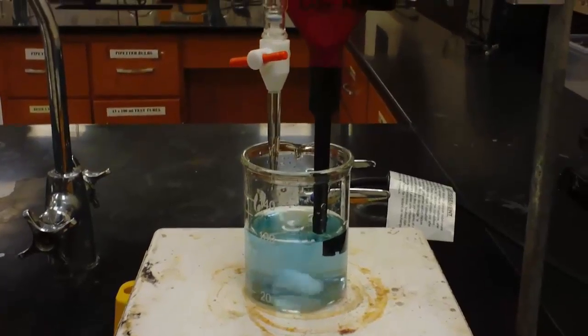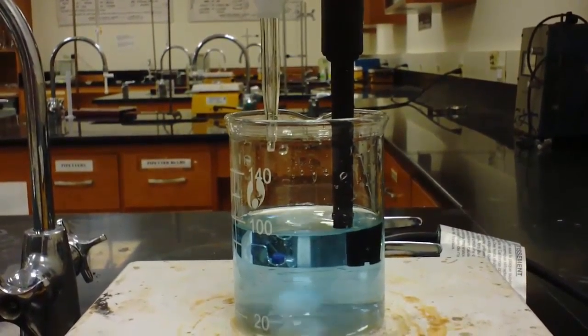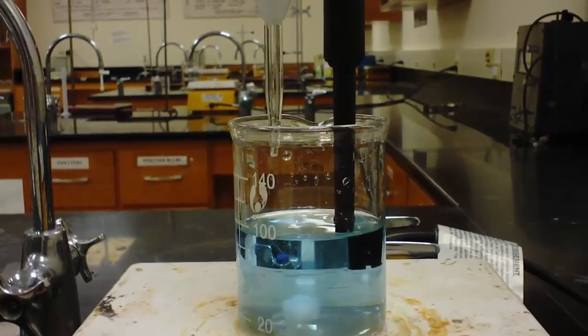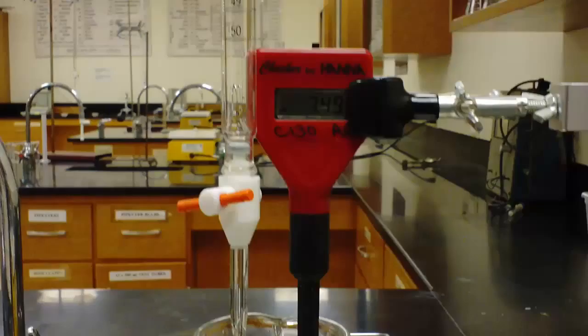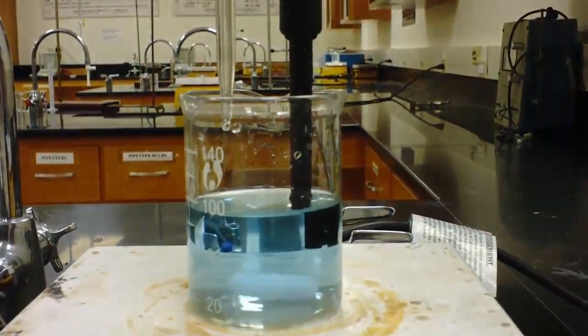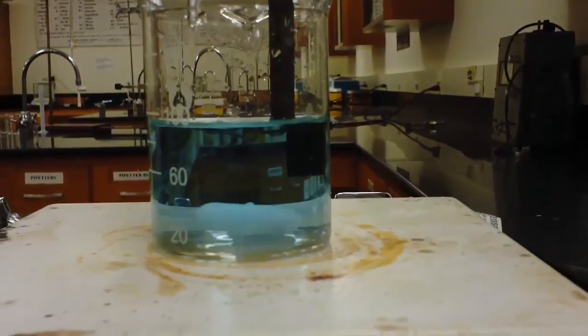You want to have the burette set up so that the tip of the burette is below the top of the beaker so that you make sure all the liquid goes in the burette. You want to have the pH meter so that first of all you can read it, second of all so that the bottom is in the liquid and so that the bottom is above the spin bar.